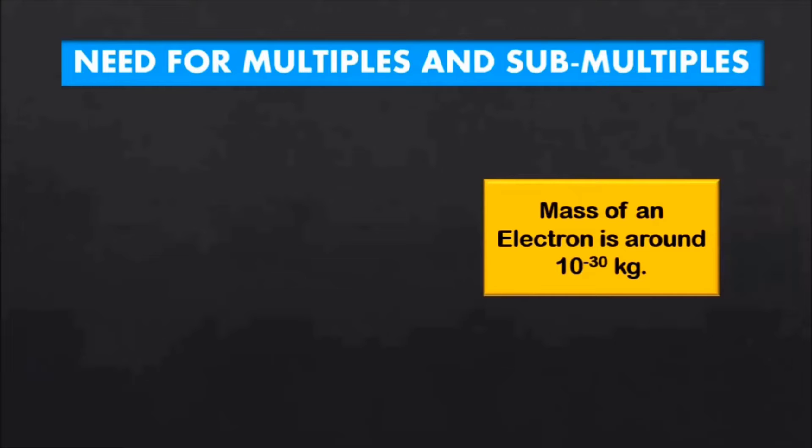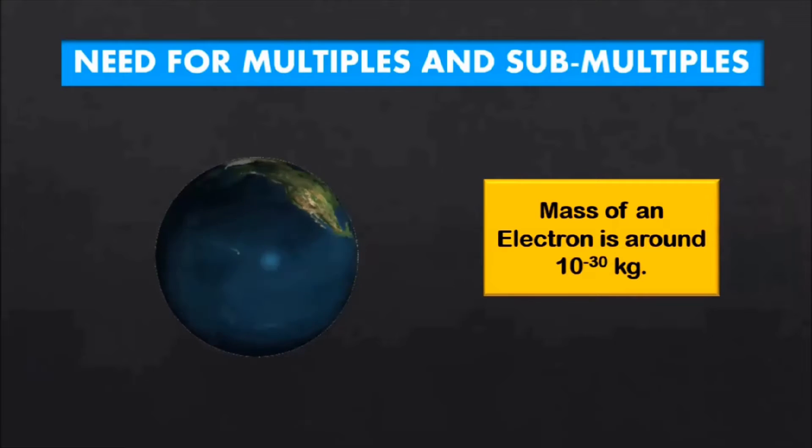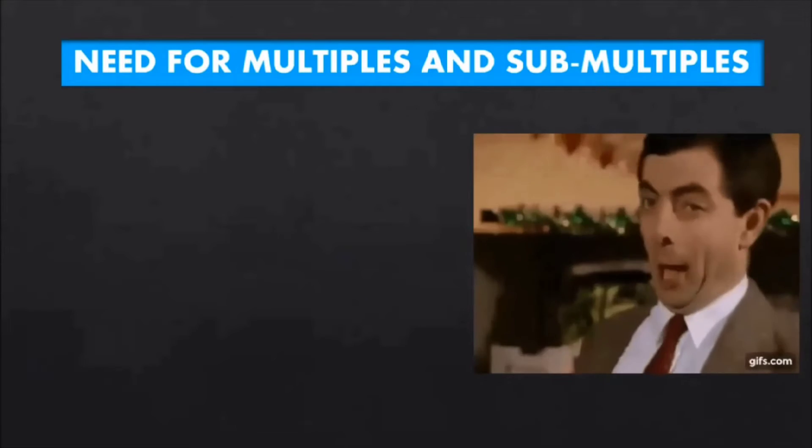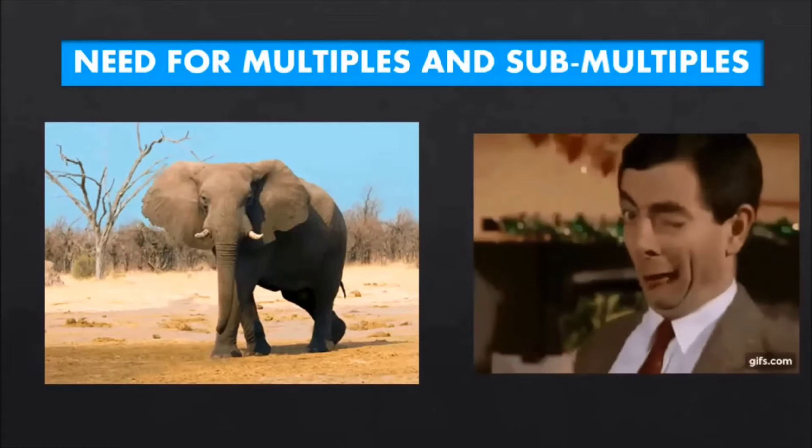Mass of an electron is around 10 power minus 30 kg, whereas the size of the Earth is around 10 power 25 kg.